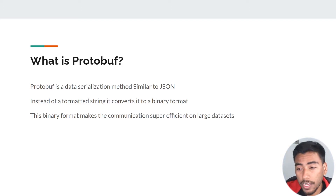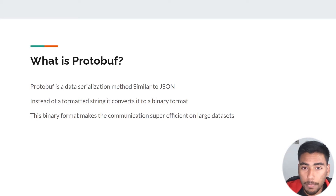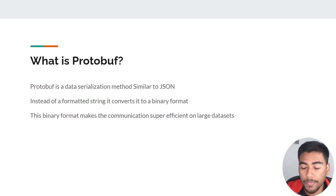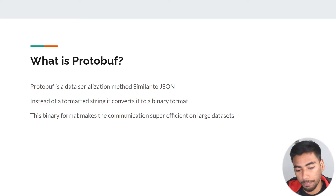The key benefit is that it's binary format, which makes the communication super efficient for large JSON data sets. I want to emphasize this for large JSON data sets, because today's example will be a very small JSON payload, so you won't notice a significant savings when it comes to converting it to binary. That's what protocol buffers are — similar to JSON.